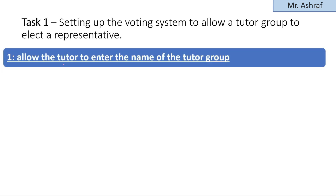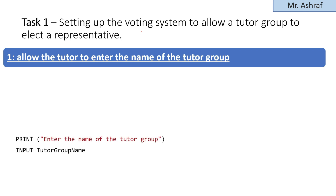The first bullet point is to allow the tutor to enter the name of the tutor group. At the beginning of setting up the voting system, you must prompt the user by showing an output message. I'm using a PRINT statement here — you can also use OUTPUT or DISPLAY; all are correct. I prefer to use PRINT to stay consistent throughout the solution.